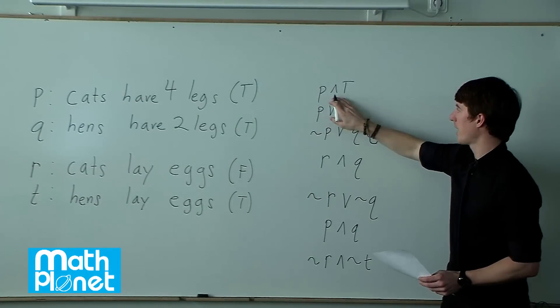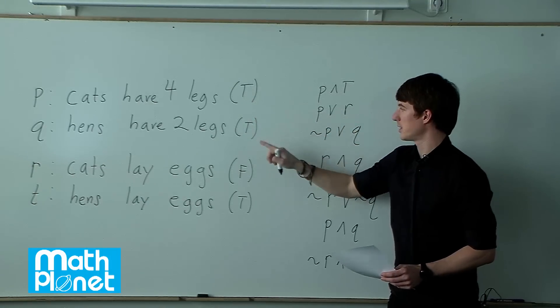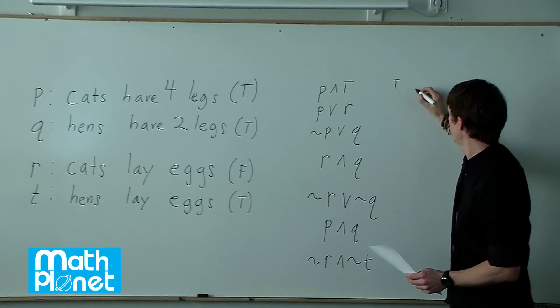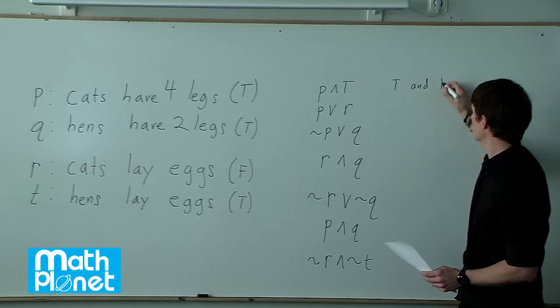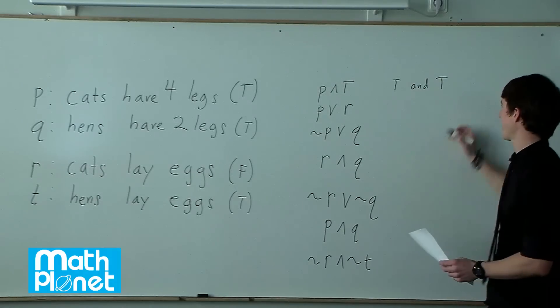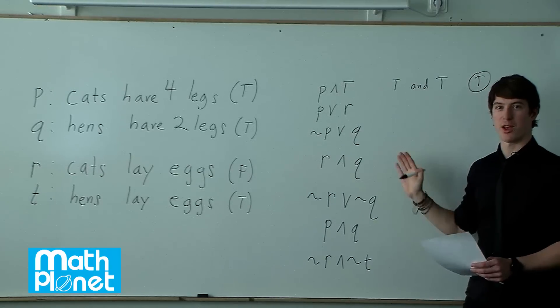So we have P and T. So what that says is P is true and T is true, so true and true. So the question is, is true and true true? In fact yes it is. So this is true. A bit strange but that's how it works.